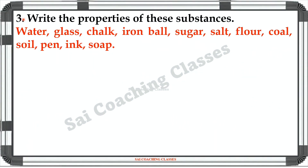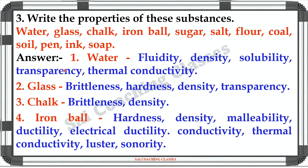Question No. 3: Write the properties of these substances. Answer - One: Water. Water ki properties kaun si hain? Fluidity, Density, Solubility, Transparency, Thermal conductivity. Second: Glass.